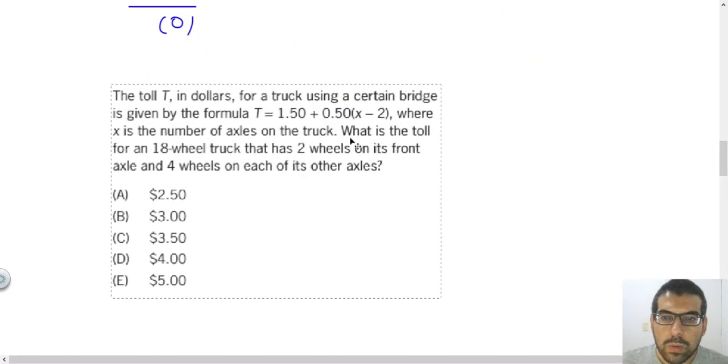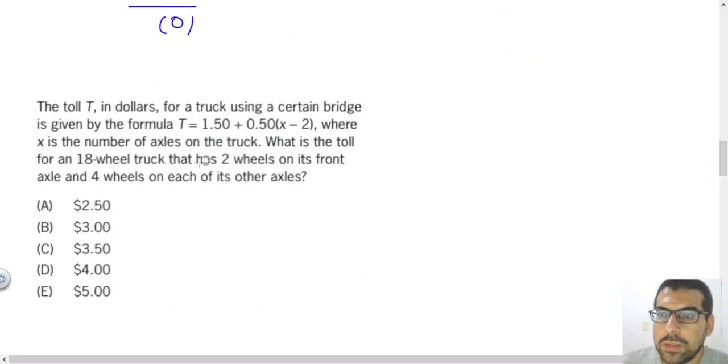In the last one, the statement told that the toll T in dollars for a truck using a certain bridge is given by the formula T equals 1.5 plus 0.5 times x minus 2, where x is the number of axles of the truck.